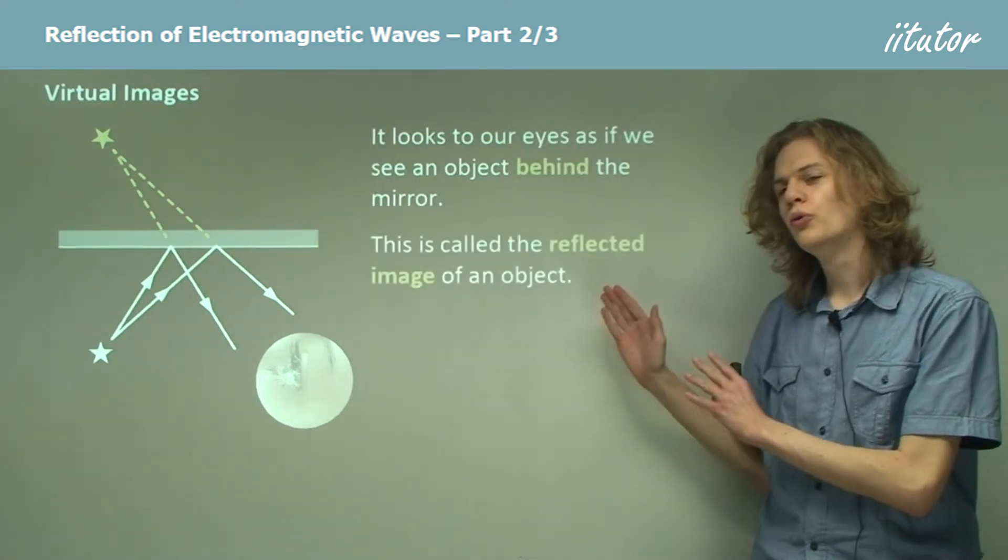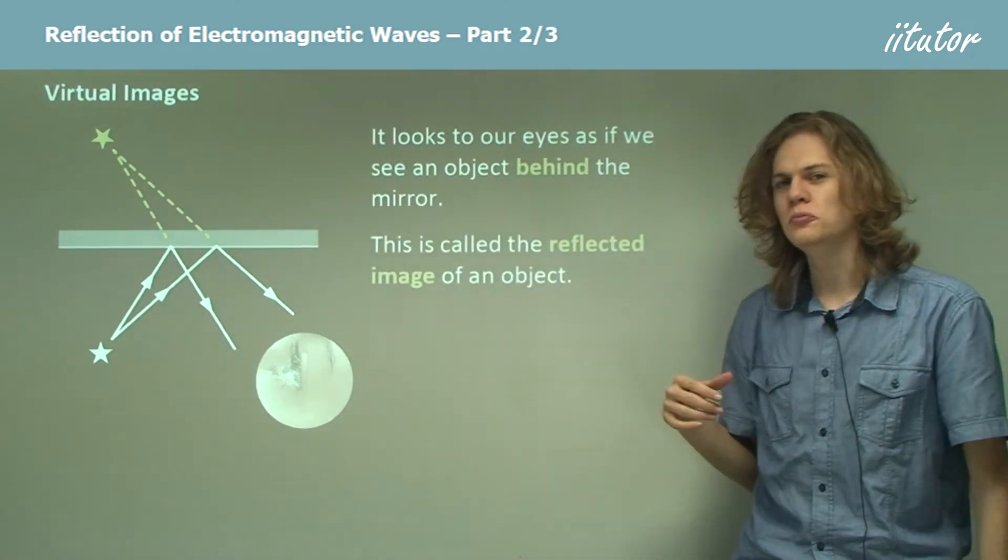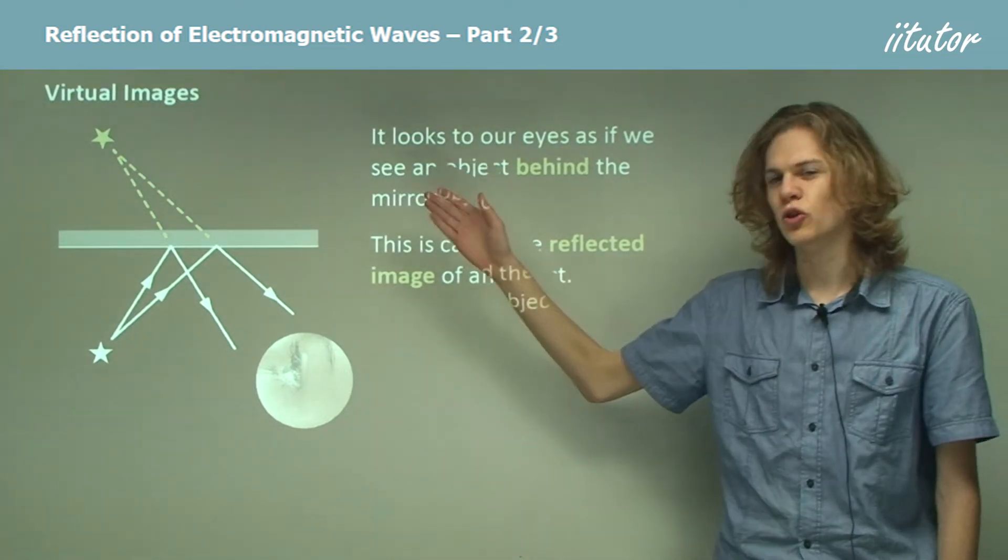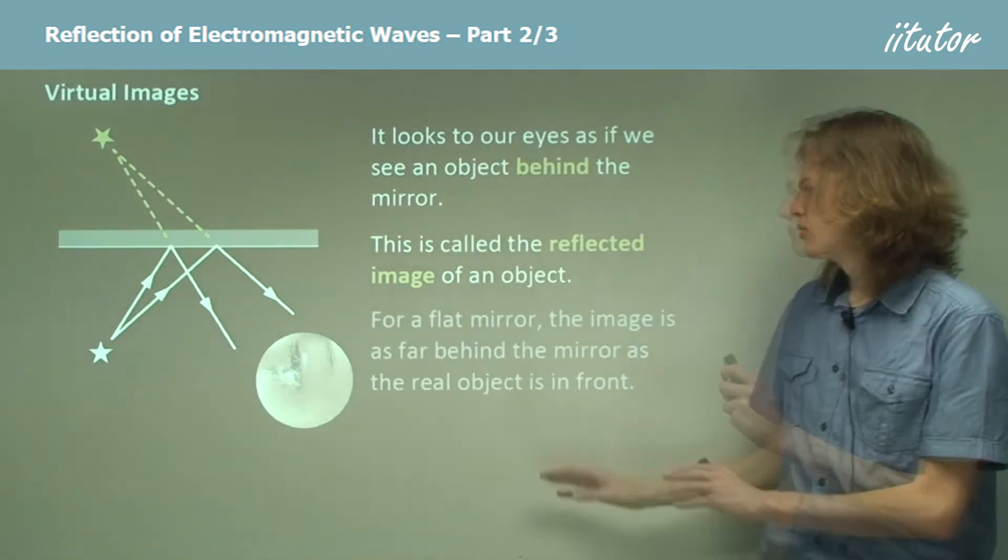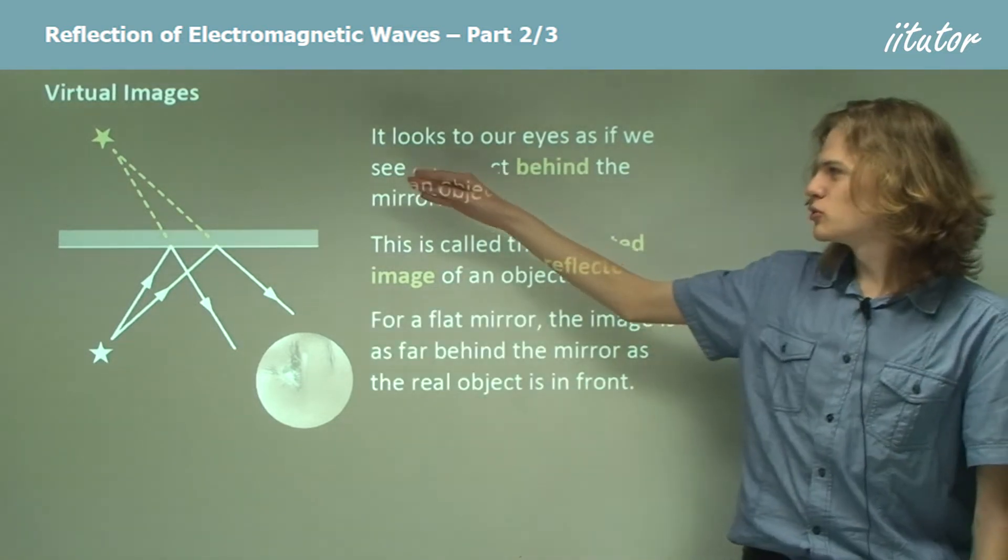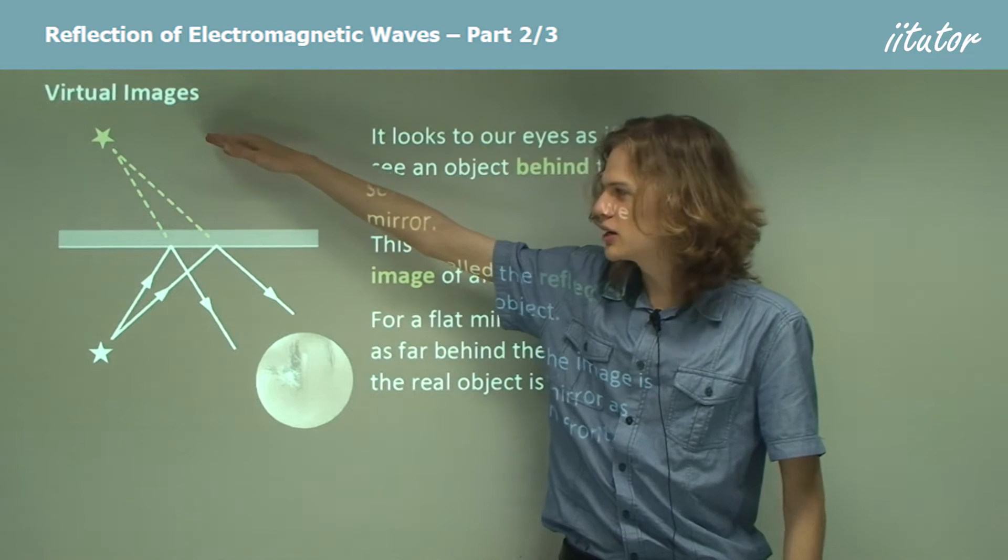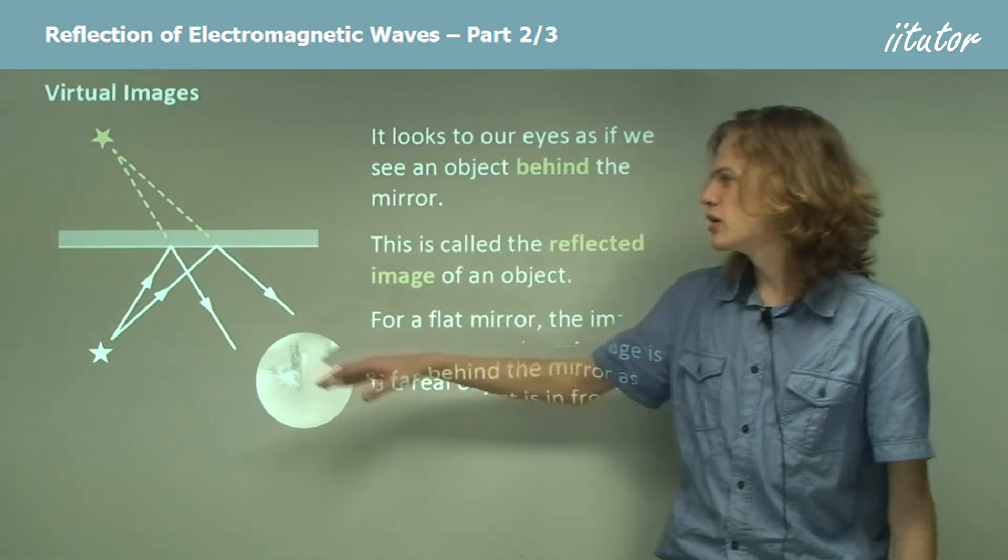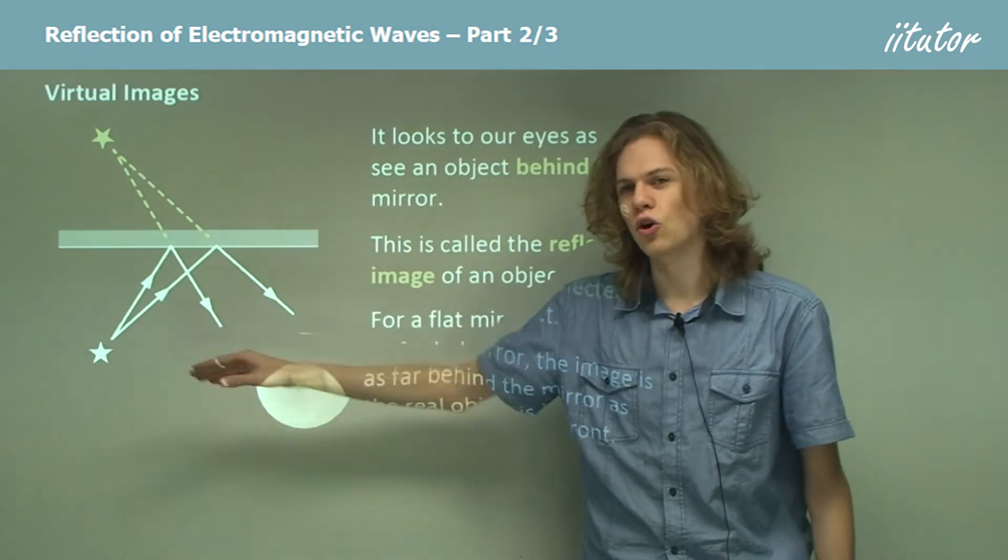This is called the reflected image of the object. It's what's known as a virtual image because in reality there's no such object there. For a flat mirror, the distance between the reflected object and the mirror is exactly the same as the distance between the mirror and the original object.